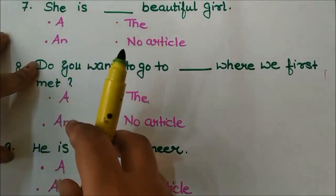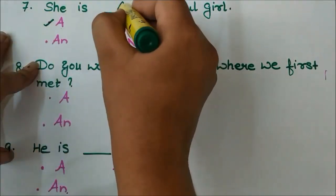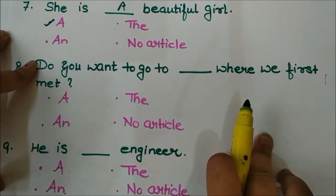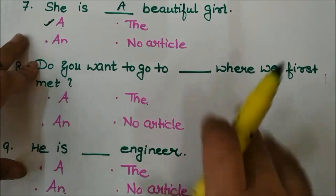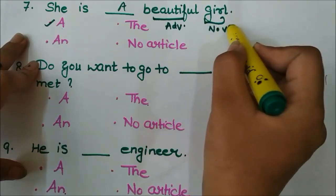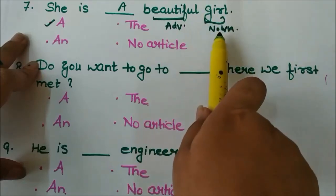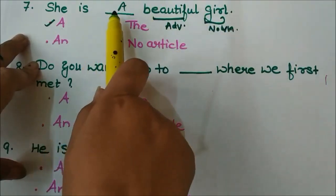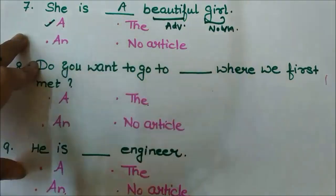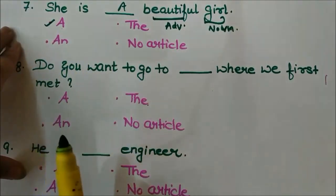Next question: 'She is ___ beautiful girl.' This is an easy one — the answer is 'a'. 'Beautiful' is an adjective here and 'girl' is a noun. Whenever there is an adjective followed by a noun, we put 'a'. Also, the sound of 'beautiful' — 'b' — is a consonant sound, so the answer is 'a': 'She is a beautiful girl.'